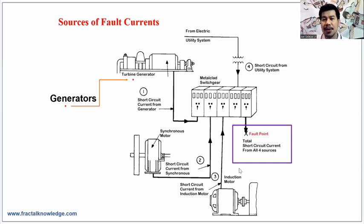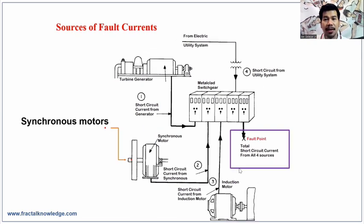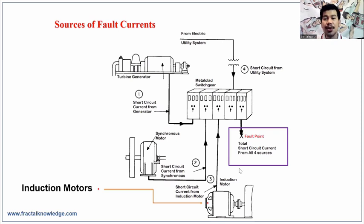The third source is synchronous motor. This motor acts as a generator at an instant of a fault, thereby contributing fault current caused by the inertia of the load that drives the rotor. A DC current is present in the winding of a synchronous motor, so in the event of fault, the synchronous motor becomes a generator.